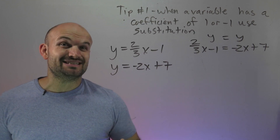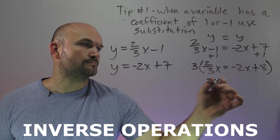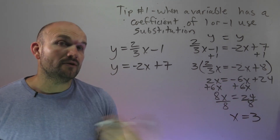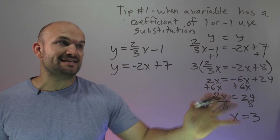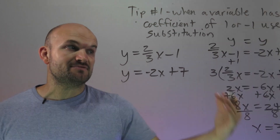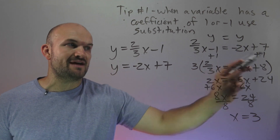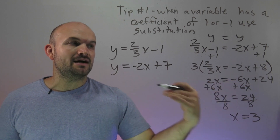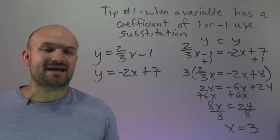Now, to go ahead and solve for x, we're going to need to use some inverse operations. We had an x on the left and the right side as well as a fraction. So the first thing I did is I got the 1 over to the other side, and then to get rid of the fractions, I multiplied everything times 3. It's very important that you multiply every single term by 3 — that eliminated my fraction. So now I just have a linear equation with a variable on both sides. I added the 6x to get them on the same side, then divided by 8 to get x equals 3.